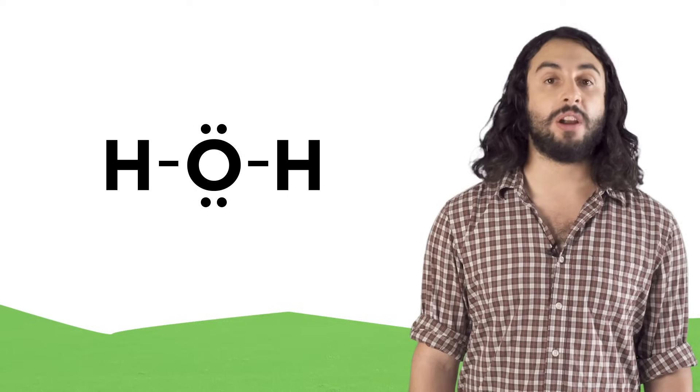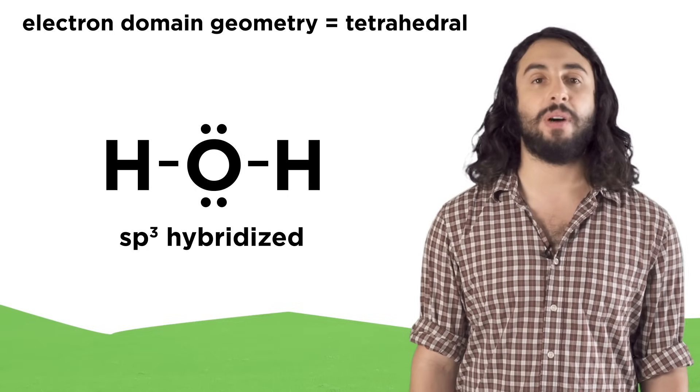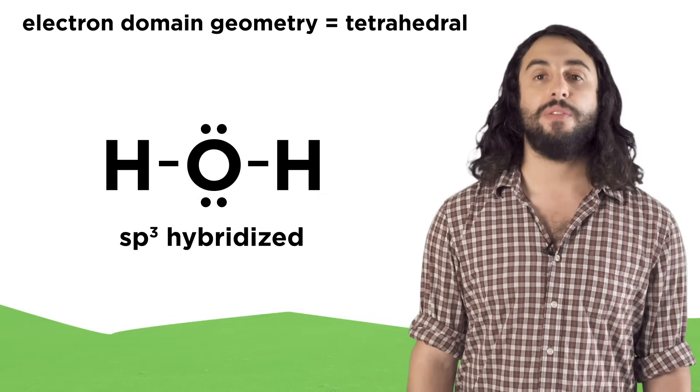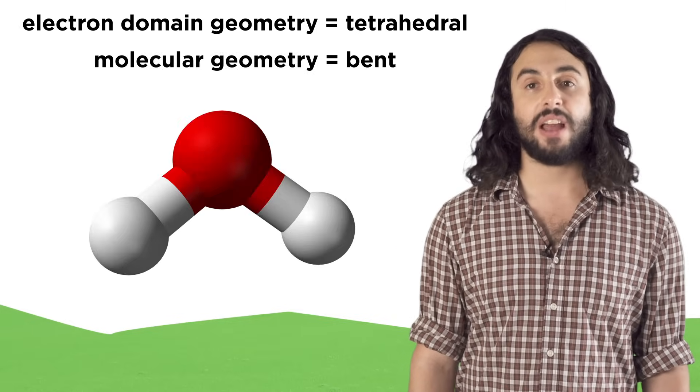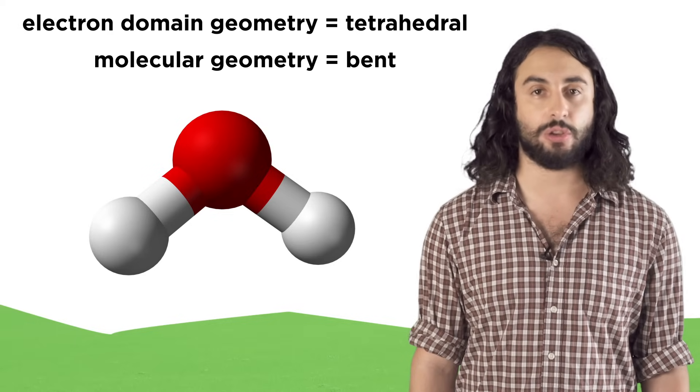The oxygen atom in a water molecule is also sp3 hybridized because it makes two bonds and has two lone pairs for a total of four electron domains. But the two lone pairs mean this molecule has a bent molecular geometry.